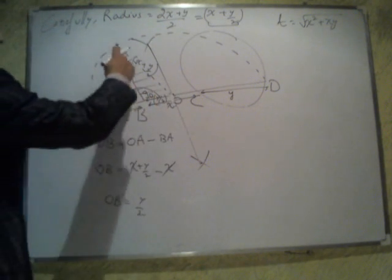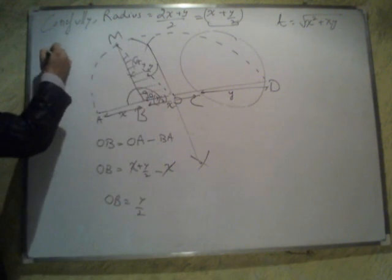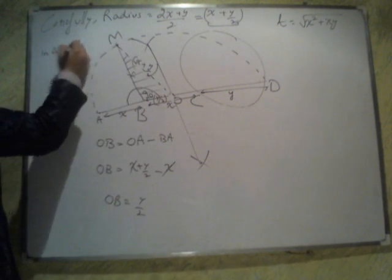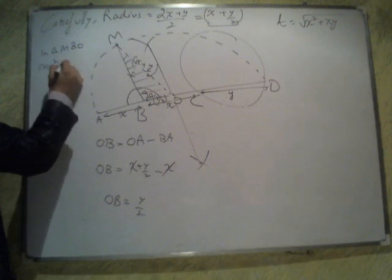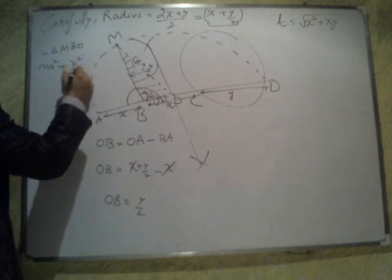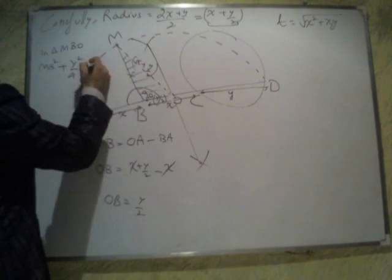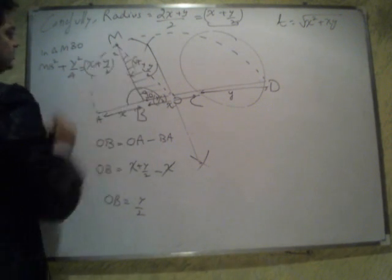And if I apply Pythagoras theorem in triangle MBO, MB square plus Y square by 4 is supposed to be equal to X plus Y by 2 whole square.